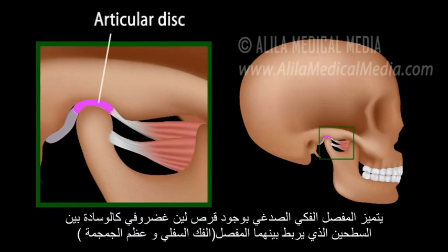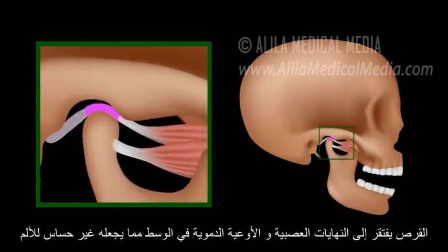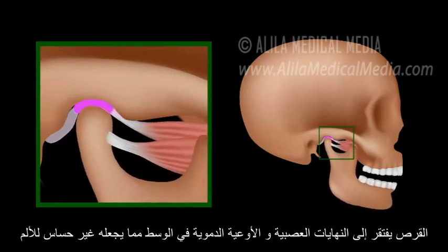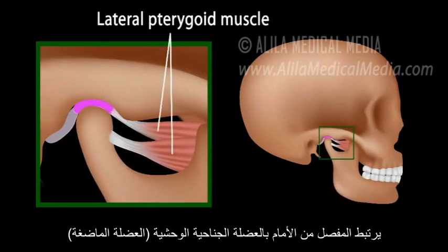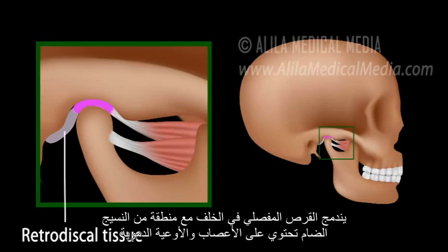The unique feature of the TMJ is the articular disc, a flexible and elastic cartilage that serves as a cushion between the two bone surfaces. The disc lacks nerve endings and blood vessels in its center and therefore is insensitive to pain. Anteriorly, it attaches to the lateral pterygoid muscle, a muscle of chewing. Posteriorly, it continues as retrodiscal tissue fully supplied with blood vessels and nerves.